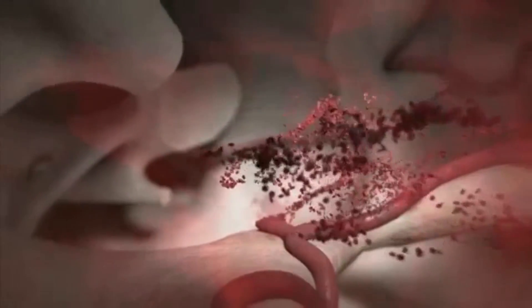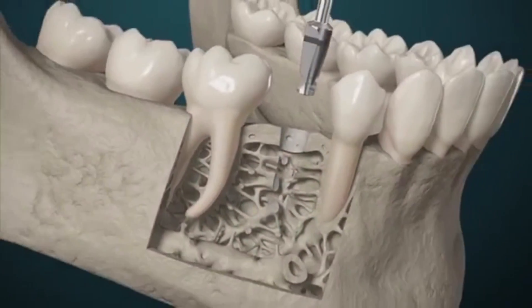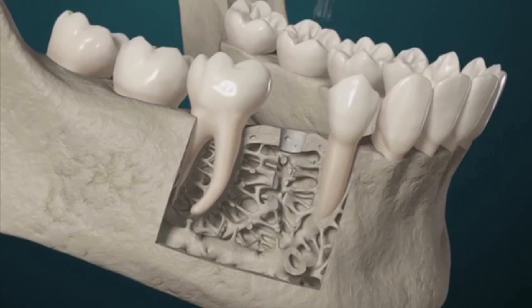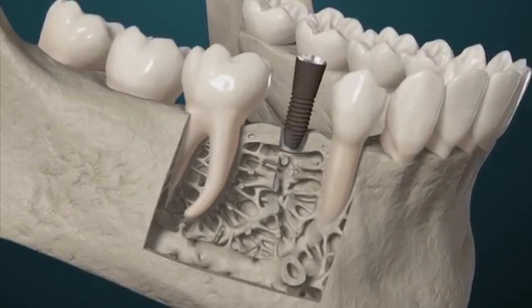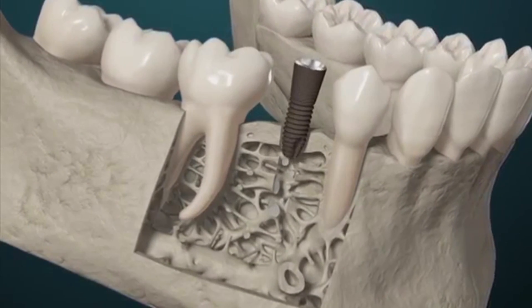The titanium implant is inserted where the tooth was previously lost. At first, the only force holding the implant in place is mechanical friction. This is called primary implant stability.